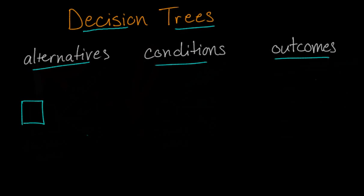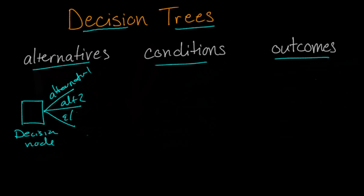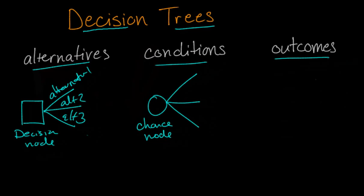Alternatives will be represented with a box, which we will call a decision node. There will be discrete paths coming out of this box, which are the various alternatives that we can choose from. Conditions will be represented by a circle, or a chance node, and there will be discrete states of nature that could occur. Sometimes, when our state of nature can be represented by a continuous distributed variable, we might represent the chance node differently.